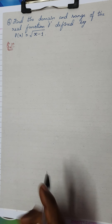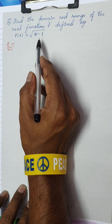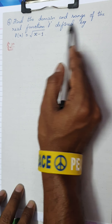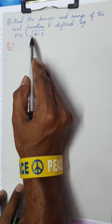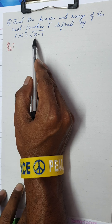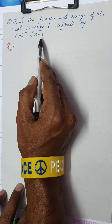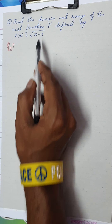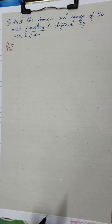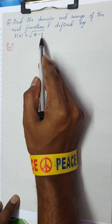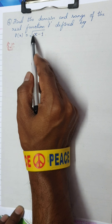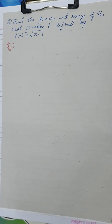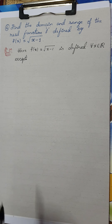Question number 4: find the domain and range of f(x) = √(x − 1). This looks similar to the previous question but is quite different. For √(x − 1) to be a real function, the expression inside the square root must be non-negative. So x − 1 must be ≥ 0, meaning x ≥ 1.